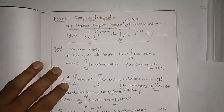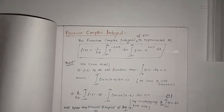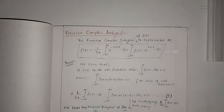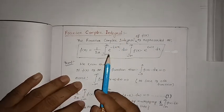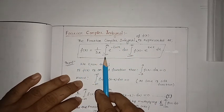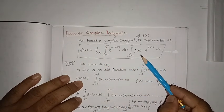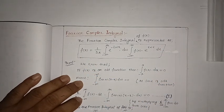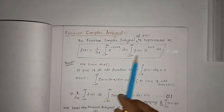Now we are going to go for the Fourier complex integral. This proof is sometimes asked in your exam — it can be a six-mark question. The Fourier complex integral is represented as f(x) = one by two pi, integral minus infinity to plus infinity, e to the power minus i·ω·x dω, times integral minus infinity to plus infinity f(t) e to the power i·ω·t dt. We now have to prove this.